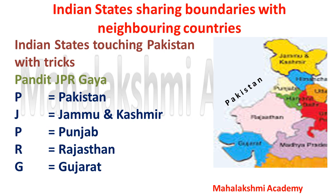Starting with Pakistan — Indian states touching Pakistan. The trick is 'Pandit Jaipur Gaya.' P stands for Pakistan, J stands for Jammu and Kashmir, which is a matter of conflict between India and Pakistan, P stands for Punjab, R stands for Rajasthan, and G for Gaya stands for Gujarat. So the trick to remember states touching Pakistan is: Pandit Jaipur Gaya.